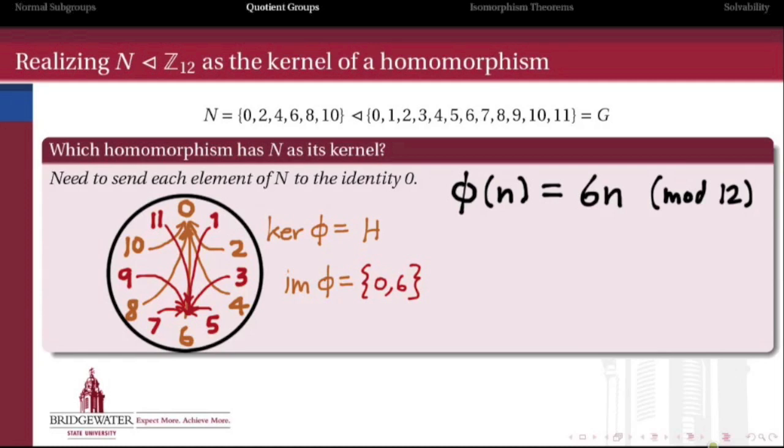Meanwhile, the image of this homomorphism consists of just 0 and 6. 0 is where all of the elements in N are going, and all the elements in the coset 1+N are going to 6.